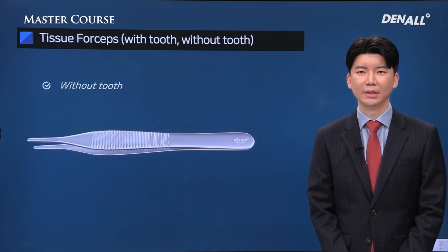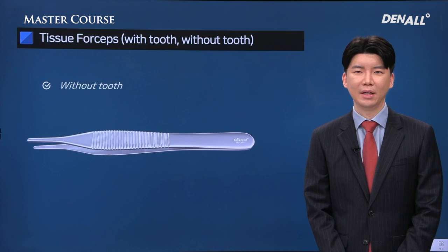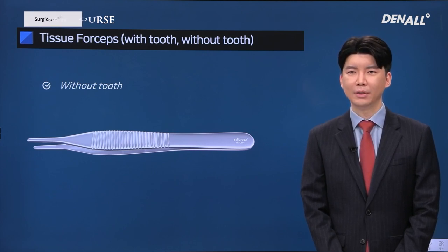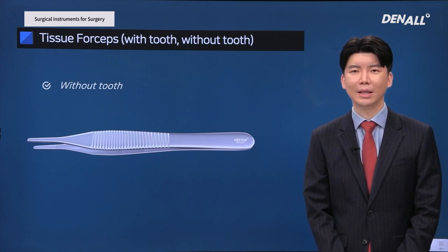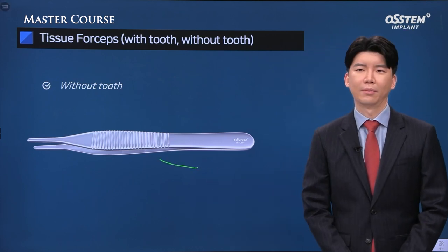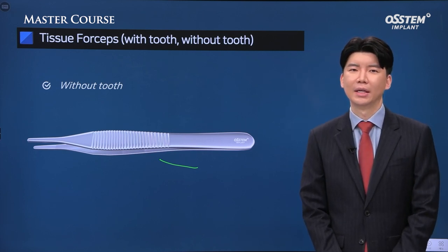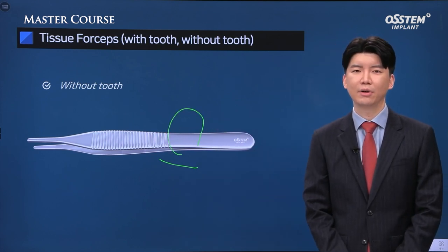For implant surgery, you need a forcep to hold on to the tissue. At times a forcep may be insufficient when performing GBR, and before flap closing when making a releasing incision, you need to grab the tissue securely — a tissue forcep is a must-have. There are two different types of tissue forceps, and you should use the forcep without a tooth to prevent any tissue damage.